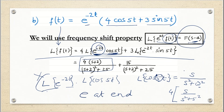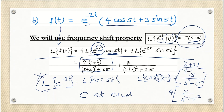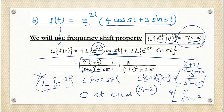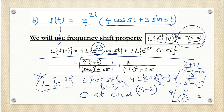I have seen students make a mistake during the shift in the denominator. Don't write s² − 2; instead, first do the shift: s becomes s + 2, and then square it — giving (s + 2)². Even if it is s to the power 4, you first shift to get (s + 2) and then raise to the power 4. Do the shifting first, then apply the power.